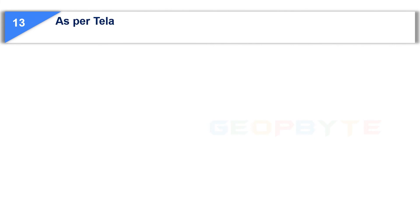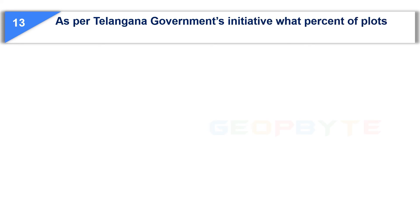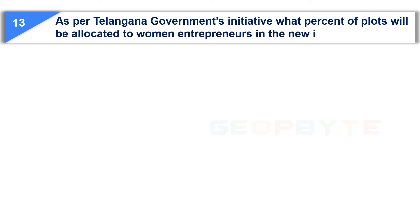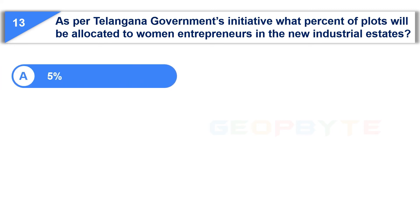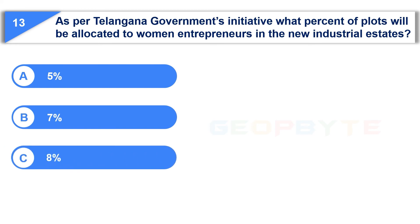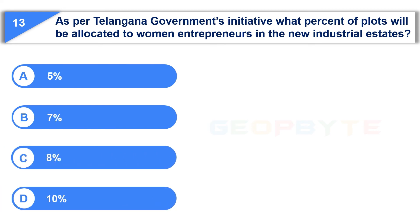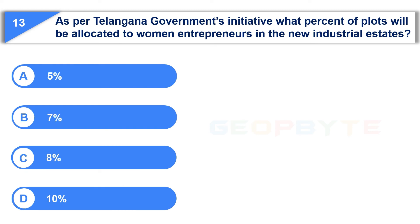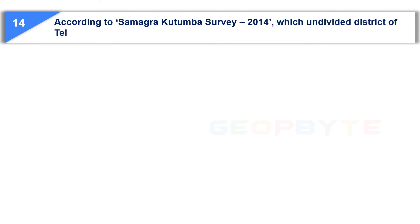The thirteenth question is: As per the Telangana government's initiative, what percent of plots will be allocated to women entrepreneurs in the new industrial estates? Option A: 5%. Option B: 7%. Option C: 8%. Option D: 10%. And the correct answer is Option D: 10%.